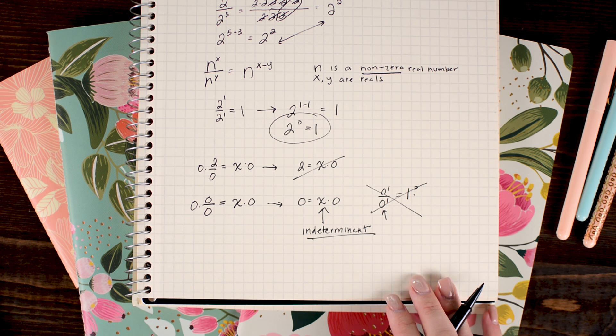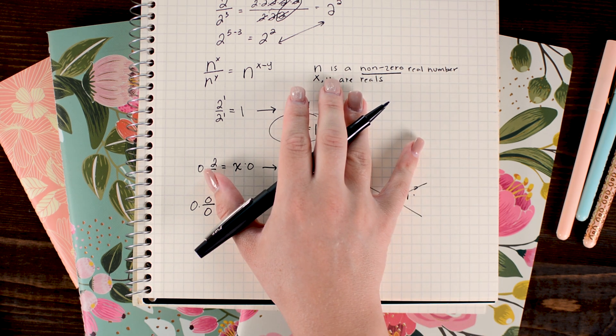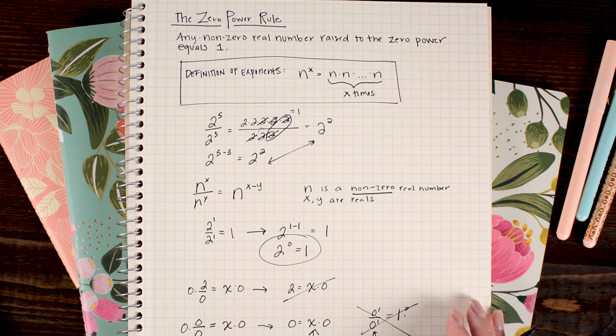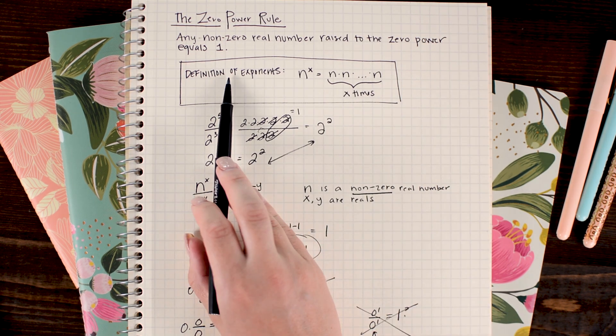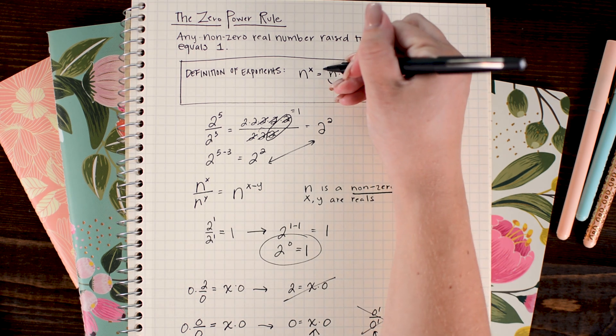Truth is, it's not actually clear what we want to define 0 to the 0 power as. Some say that it's 1, some say that it's 0, some say that it's undefined. The majority, I would say, define it as equal to 1, like the rest of our zero power rule.